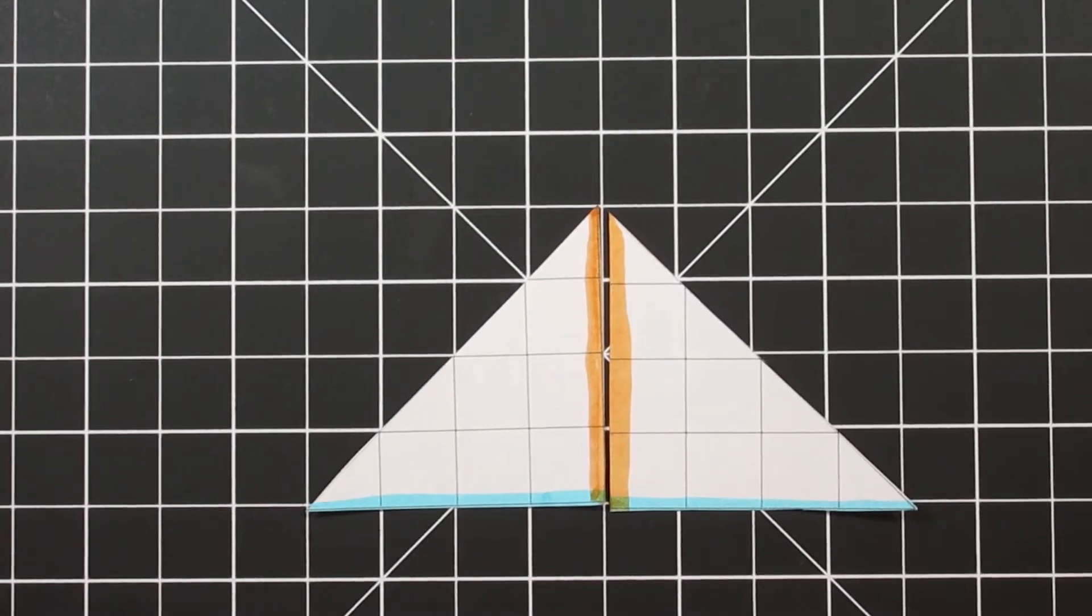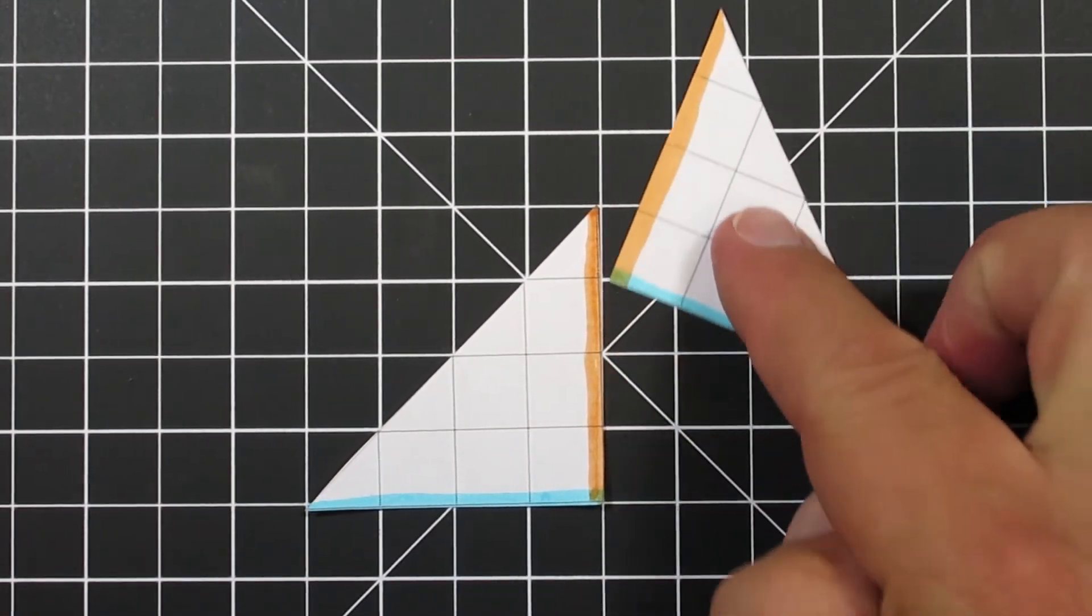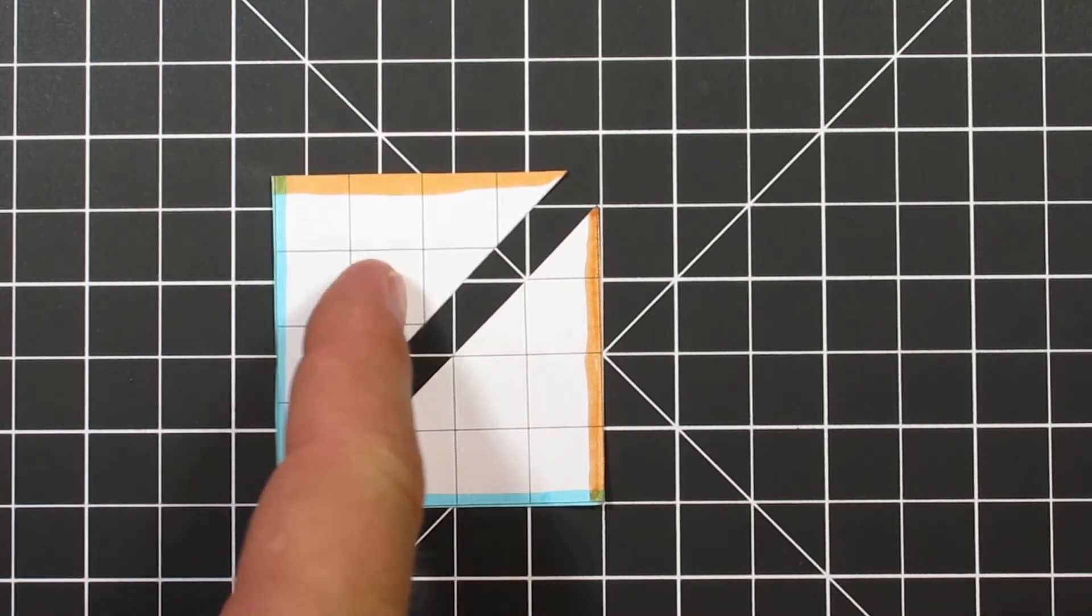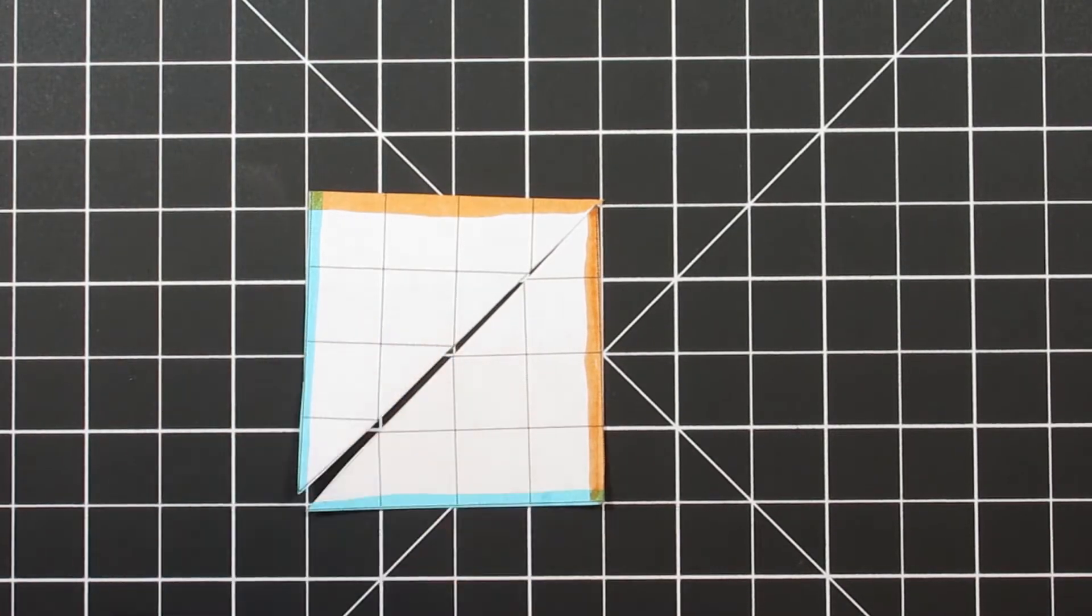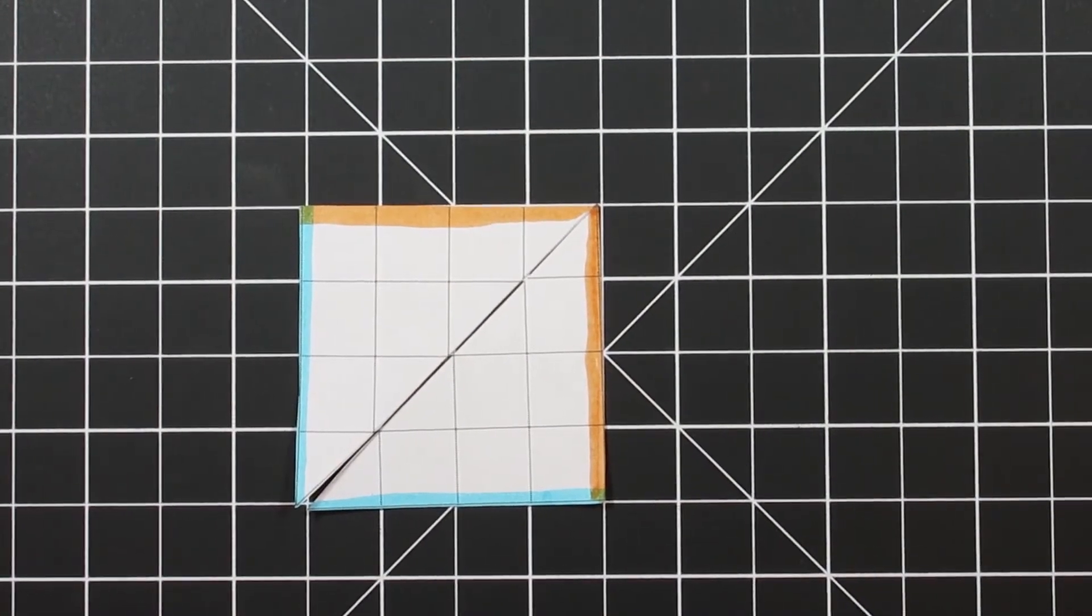This next triangle has a base of 8, height of 4. Again, cut the base in half, rearrange it, now we have a 4 by 4 rectangle, which has an area of 16.